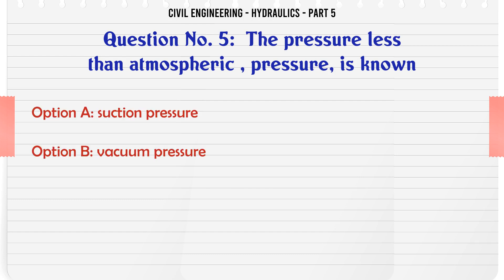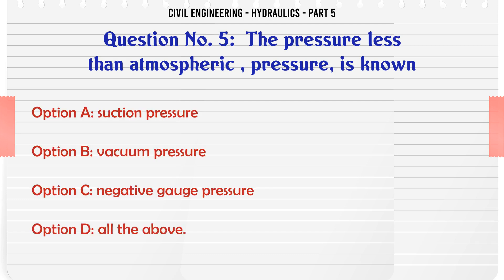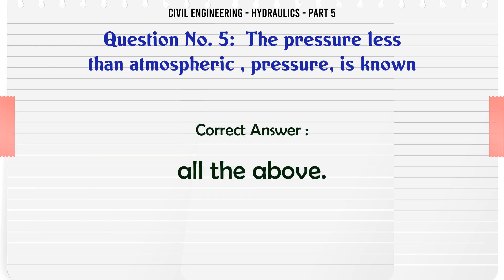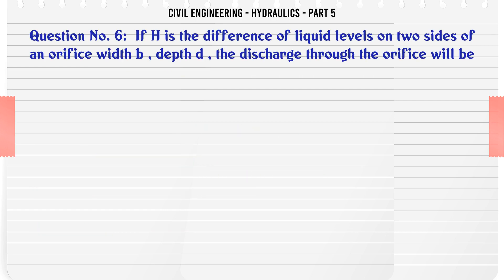The pressure less than atmospheric pressure is known as: a. suction pressure, b. vacuum pressure, c. negative gauge pressure, d. all the above. The correct answer is all the above.